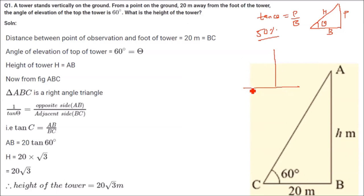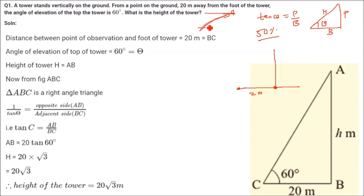From a point on the ground — say this point is on the ground — 20 meters away from the foot of the tower. The angle of elevation: when we see up, it is the angle of elevation, from here to here. When we look down, this is the angle of depression. So the angle changes.